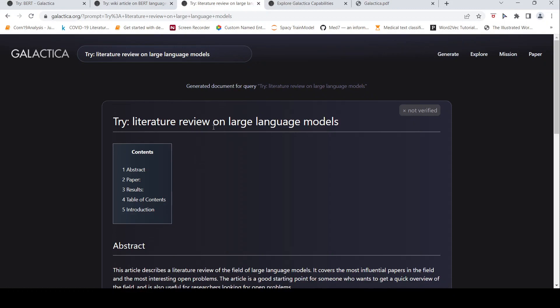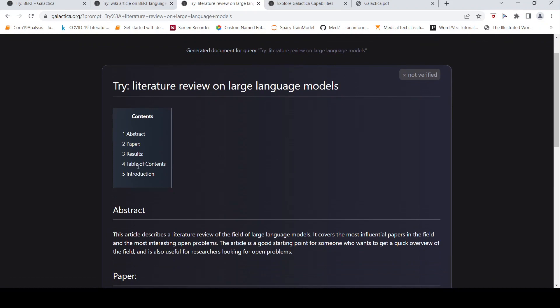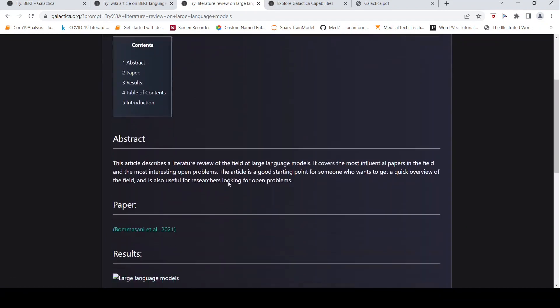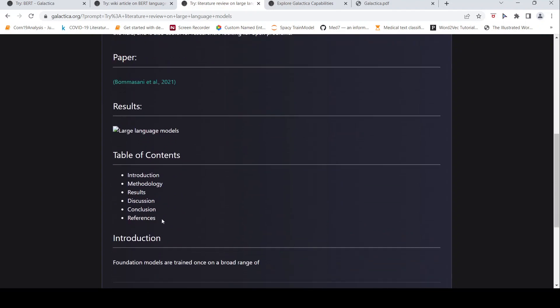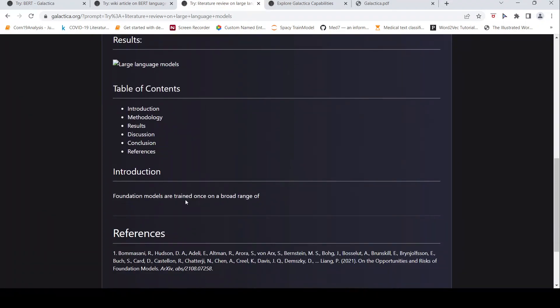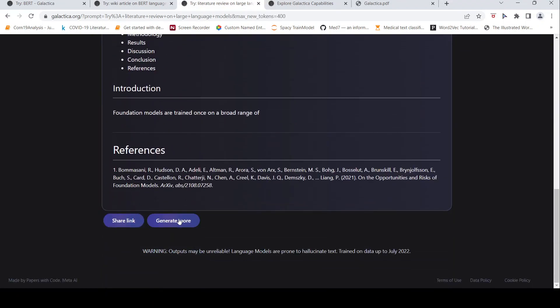Here I said try literature review on large language models. So then it says abstract paper results table of contents introduction. Here it says abstract article describes a literature review of the field of large language models it covers the most influential papers in the field and most interesting open problems. Reference paper is given over here. Some results are given. Maybe I'll say generate more and see what happens. Let's see if this is done.